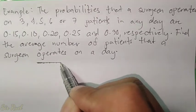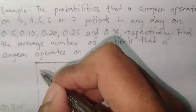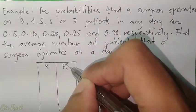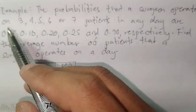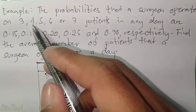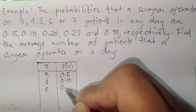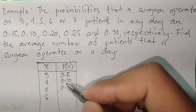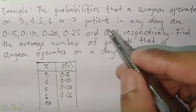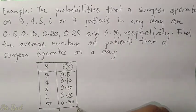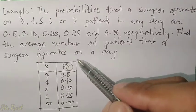We draw two columns, labeled x and P(x). The values are: 3 with probability 0.15, 4 with probability 0.10, 5 with probability 0.20, 6 with probability 0.25, and 7 with probability 0.30. Step 2 is to multiply these values by their corresponding probabilities, so we add another column labeled x times P(x).